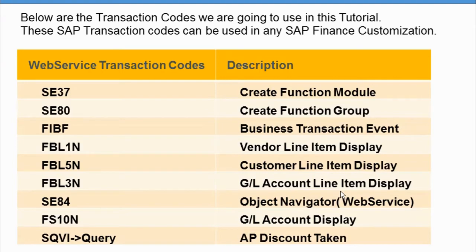FIBF is for business transaction events, which we'll be using for FBL1N, FBL5N, and FBL3N. FBL1N is the vendor line item display — this is used heavily for consultant work, probably about 70% of the time.